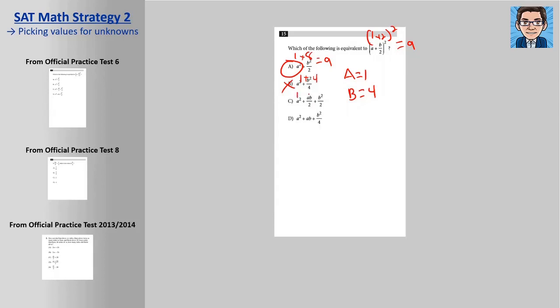This is going to be 1 plus 2 plus 8, so that doesn't work. But when you get down to this one, you're going to get 1 plus 4 times 1 is 4, 16 over 4 is 4, and this also equals 9.